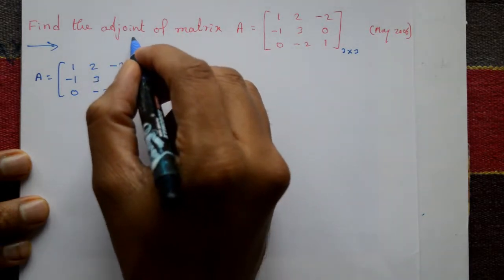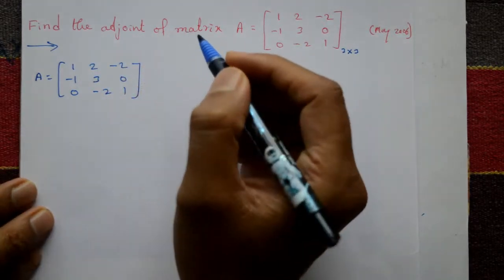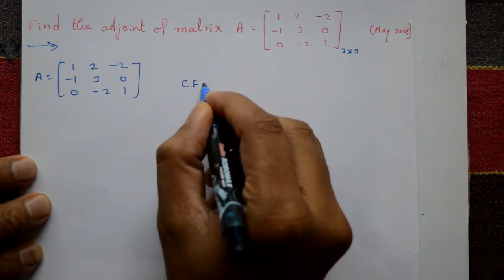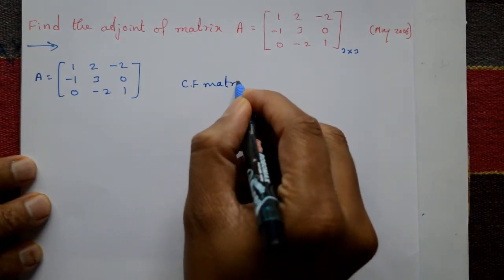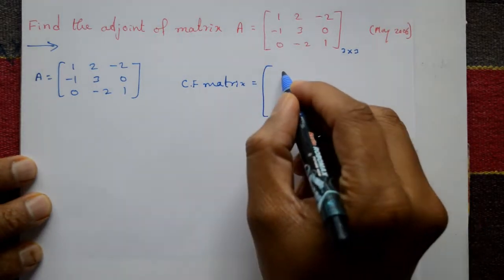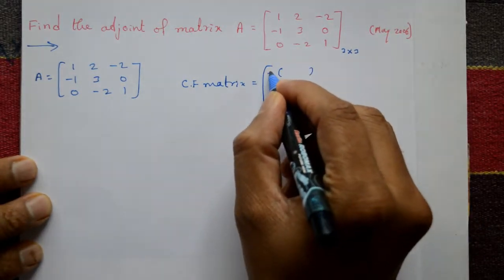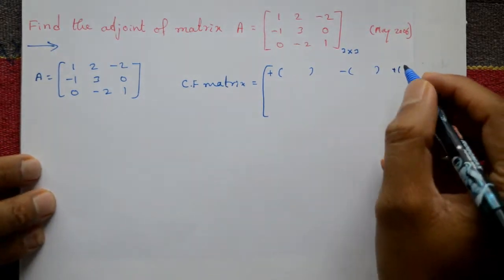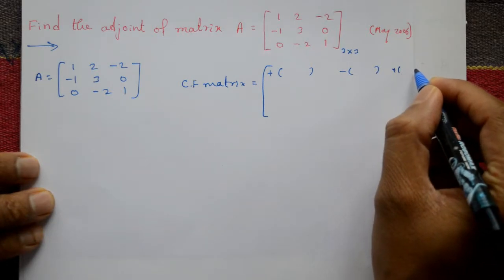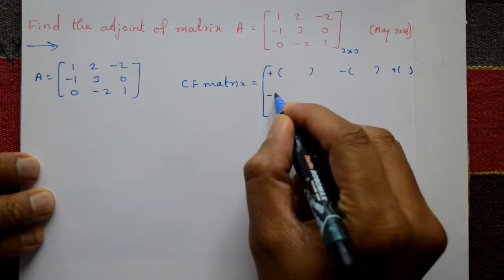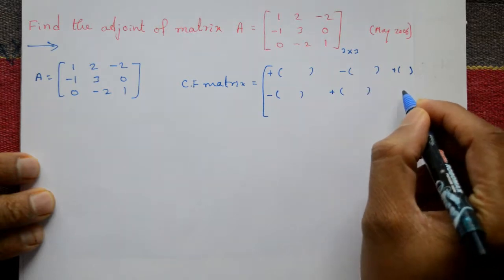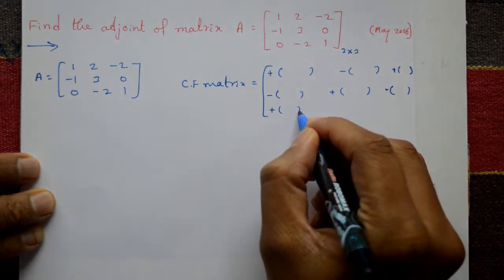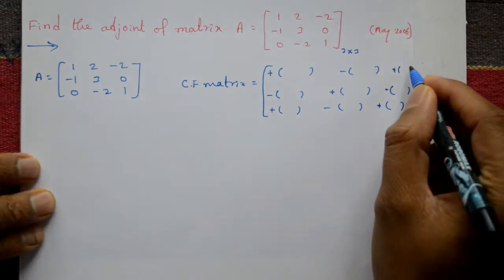Now required adjunct of matrix — first you find cofactor of matrix. The cofactor sign pattern is: plus, minus, plus for first row; minus, plus, minus for second row; plus for third row, like this.